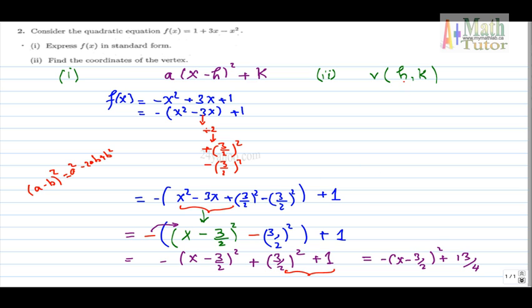All you have to do is to pick up the numbers h and k. So you go down, this is my standard form. So this is my h, which is 3 over 2 positive, and the k is 13 over 4. So you write that the vertex consists of the coordinates 3 over 2 and 13 over 4.